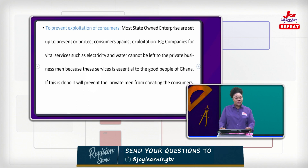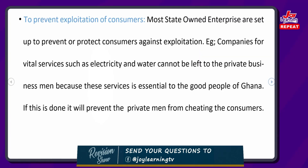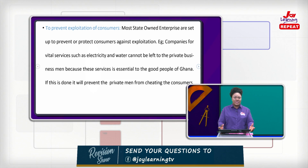The next point is to prevent exploitation of consumers. If the state does not provide these things for us, some people will take advantage of it and exploit people — draining them of their money, taking things from them without anyone talking about it. So it is important that the government creates and manages its own businesses.